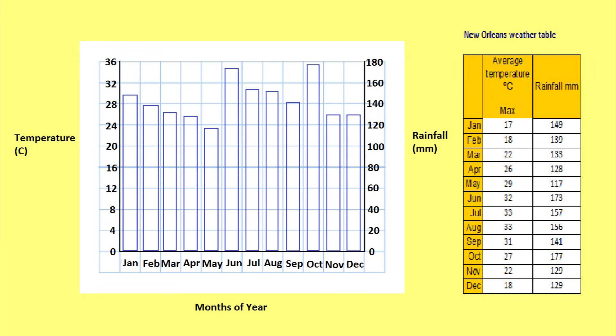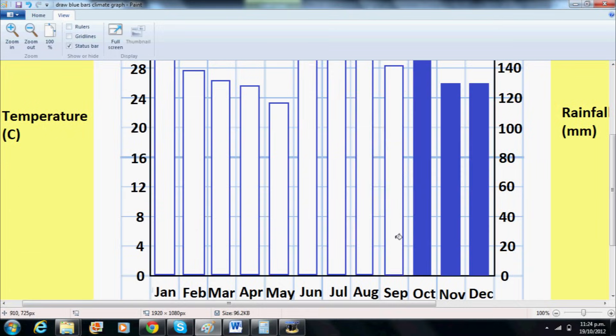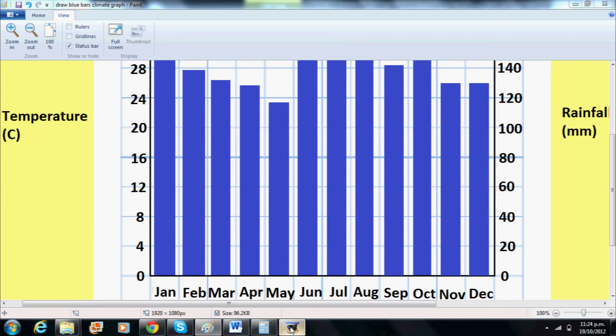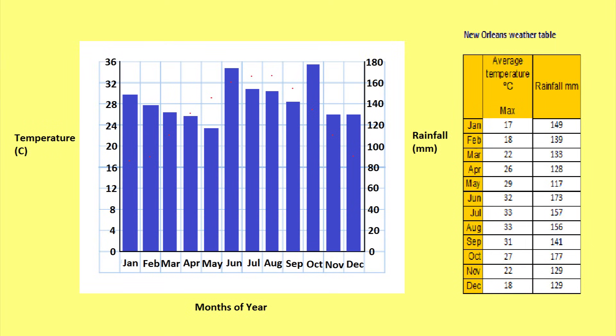Now we will draw bars for the rainfall and colour them in blue. Now we will use a red pen to plot the temperature data. Make sure we centre the dots in between each bar before connecting them to turn it into a line graph.